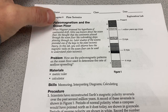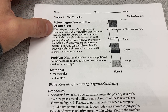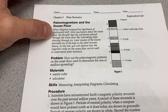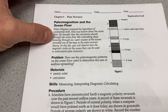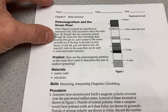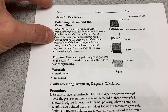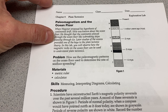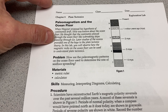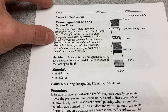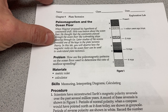When Wegener proposed his hypothesis of continental drift, little was known about the ocean floor. He thought that the continents plowed through the ocean floor like ice-breaking ships plowing through ice. It kind of sounds ridiculous now, but Wegener really didn't have any good idea how the plates moved or what was causing them to move. He knew they had moved, and the best he could come up with was that they must be plowing along through the ocean floor like little ships. Little did he know that the continents are actually attached to plates, some of which include ocean floor, and the entire plate is moving because of convection currents deep within the Earth.